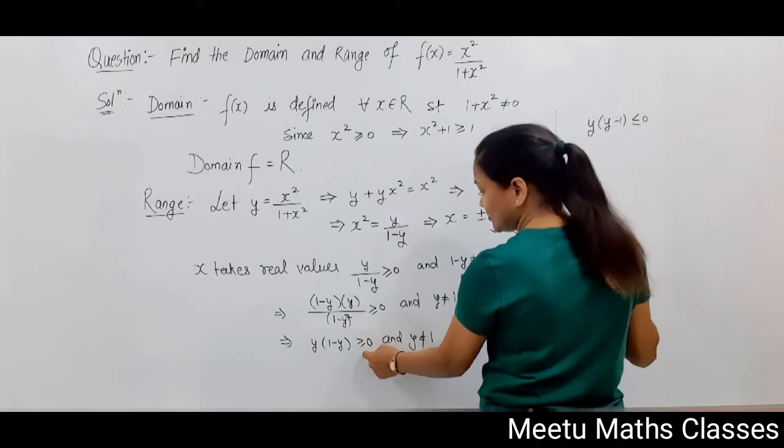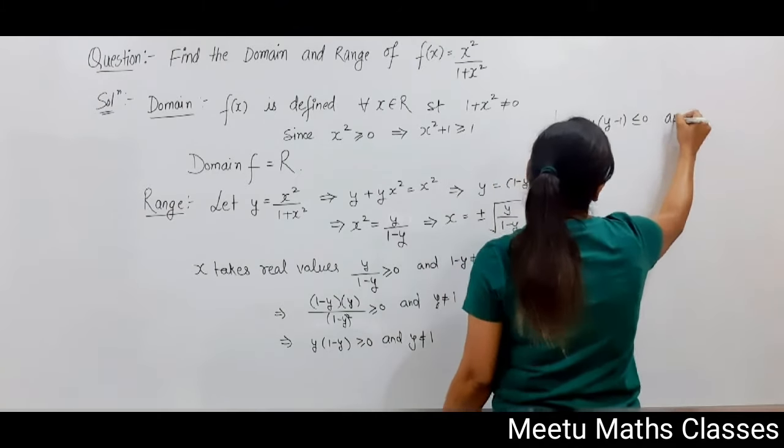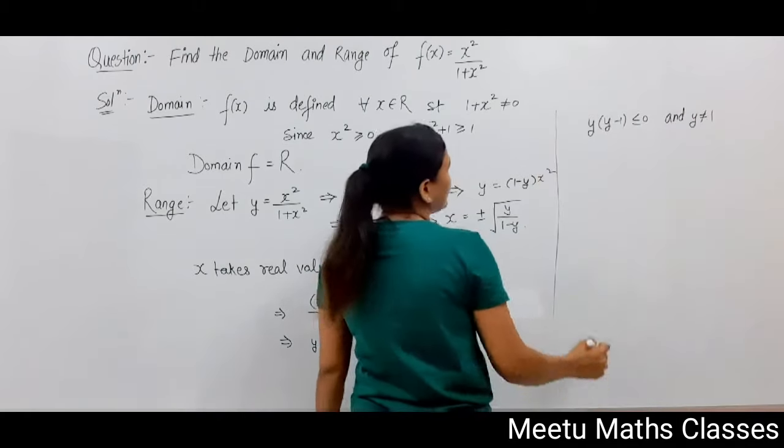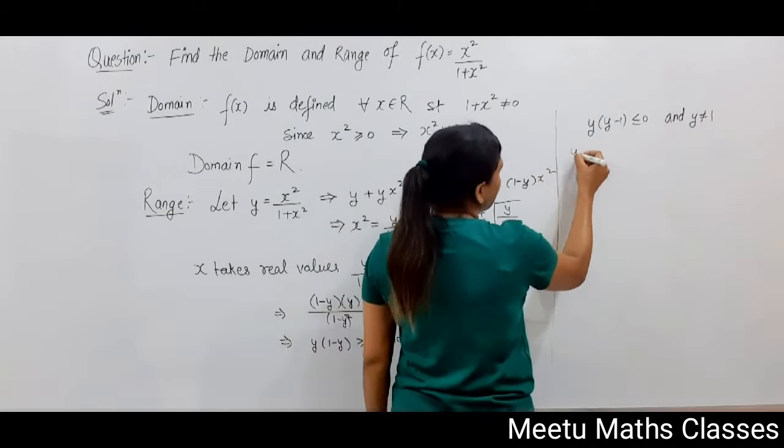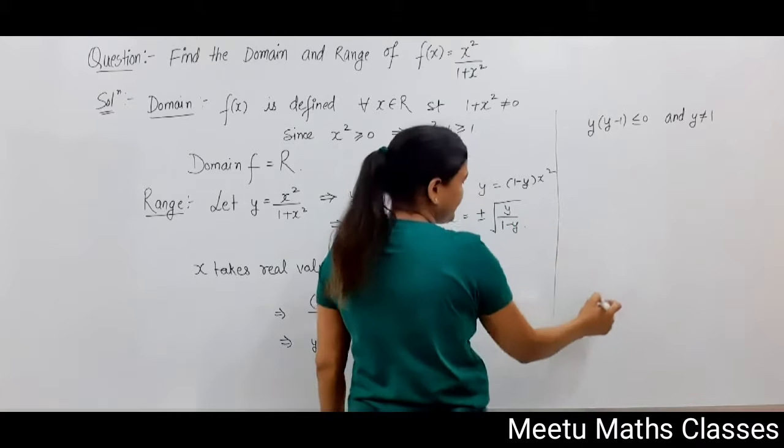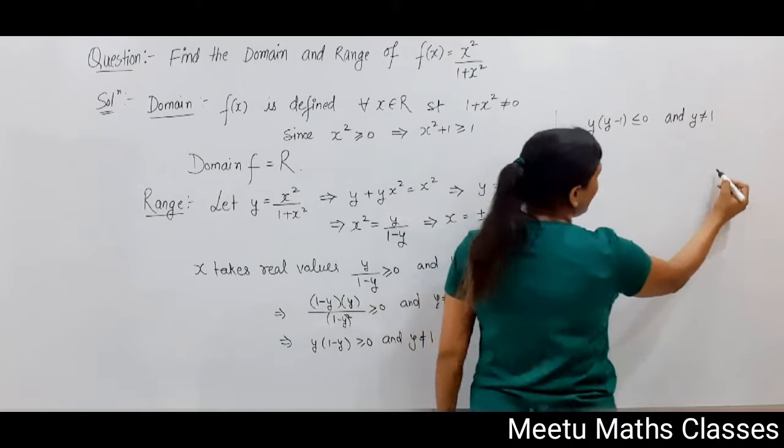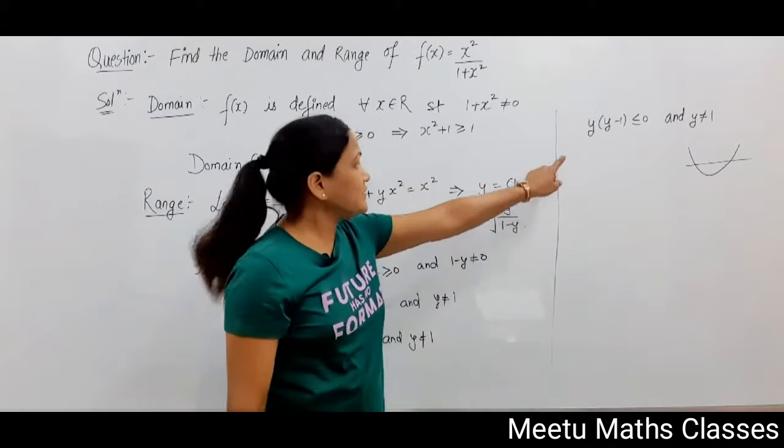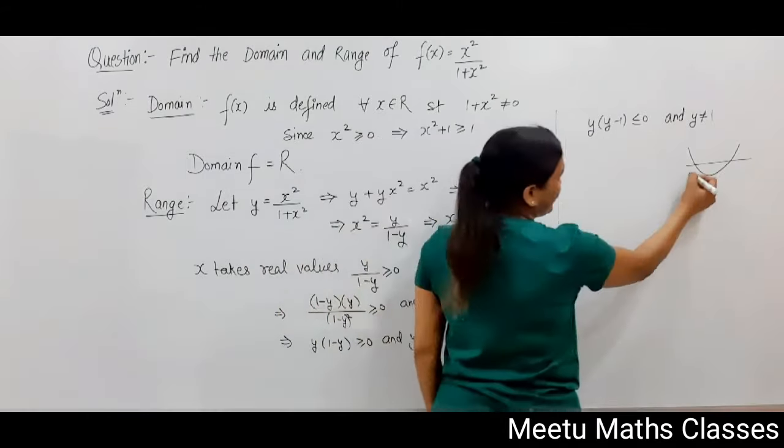The inequality changes, and y should not equal 1. This quadratic has two factors: the first one is 0 and the other one is 1.